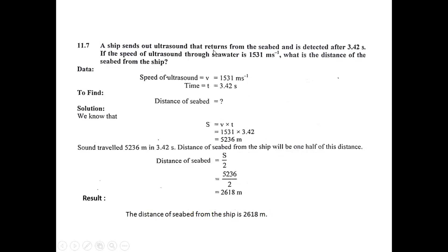Problem 11.7: A ship sends out ultrasound that returns from the seabed and is detected after 3.42 seconds. The ultrasound travels to the seabed and reflects back in 3.42 seconds. The speed of ultrasound through water is 1531 meters per second. We need to find the distance of the seabed from the ship — essentially the depth at that point.